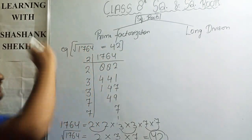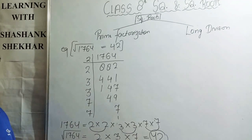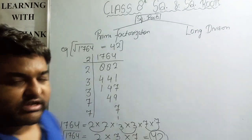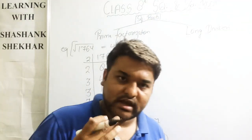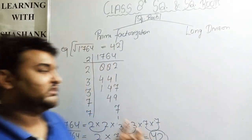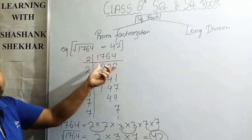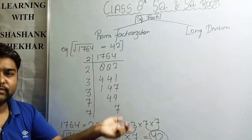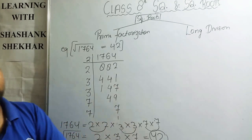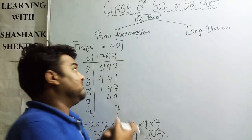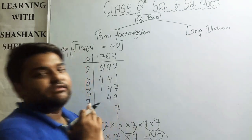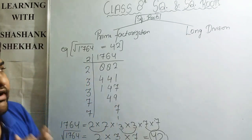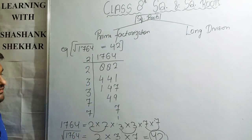So the square root of 1764 equals 42, since 7 × 3 = 21 and 21 × 2 = 42. This is the final answer. To check the answer, we can multiply 42 × 42, which gives 1764. That confirms the final answer.